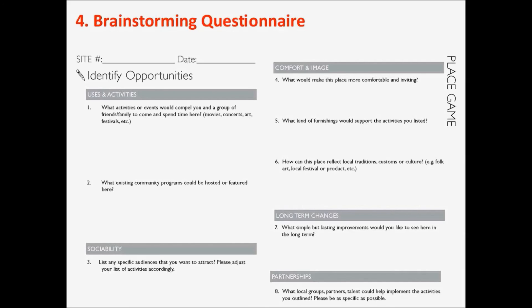The final question in the comfort and image section — question six — is about thinking of how the place and the event could reflect local traditions, customs, culture, or local art. It's really about elements that could make this event feel special, authentic, and local, connected to your particular community and your particular place.